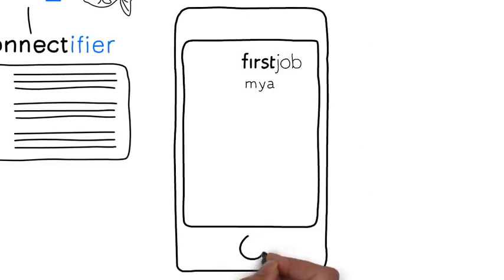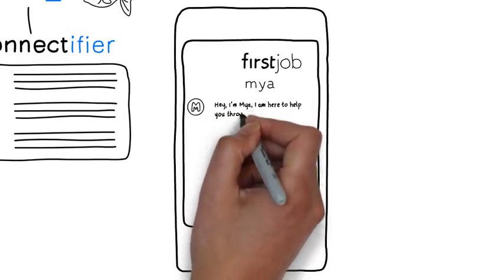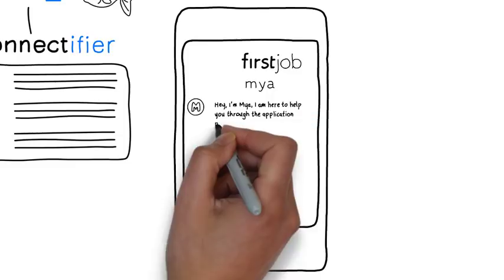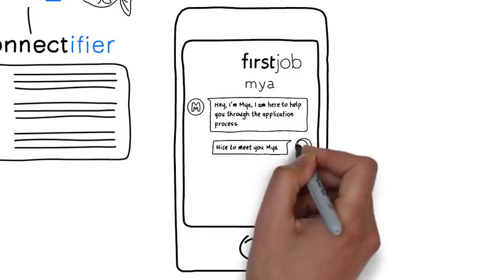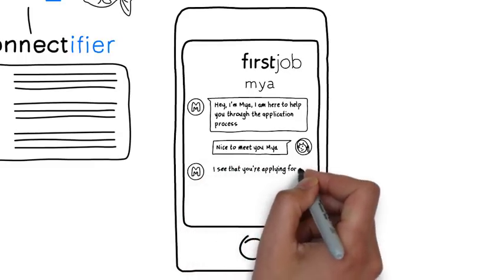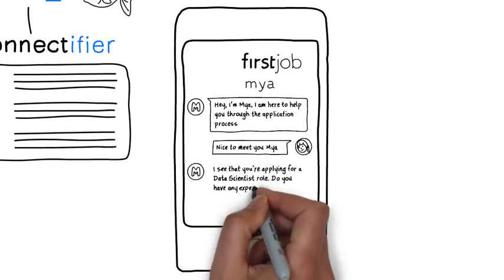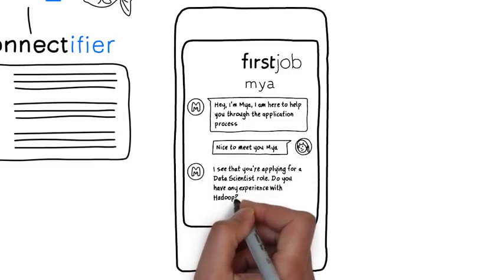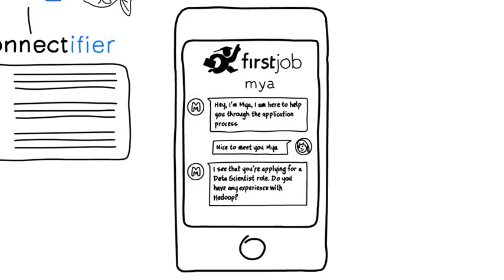Maya is one of my favorites. She really does have a personality. Maya asks contextual questions based on job requirements. She then provides personalized updates and feedback together with next steps suggestions. When she doesn't know the answer to a question, she will query the human recruiter and learn for next time. Maya can also manage the dialogue with the candidate to help them through the post-offer acceptance process.